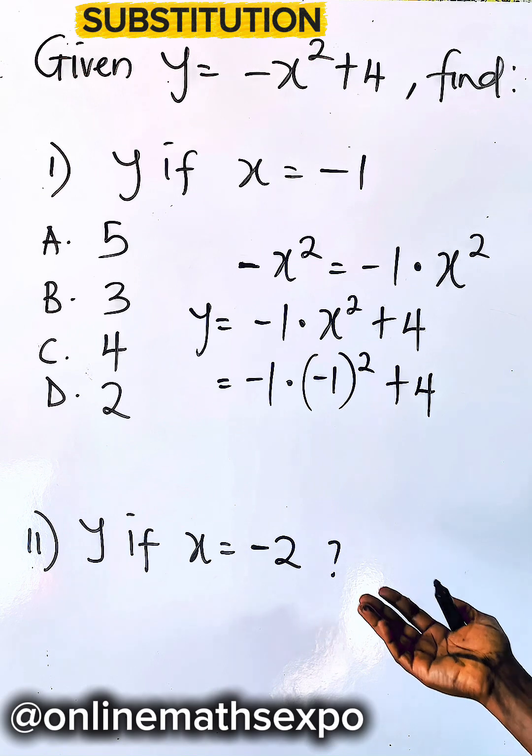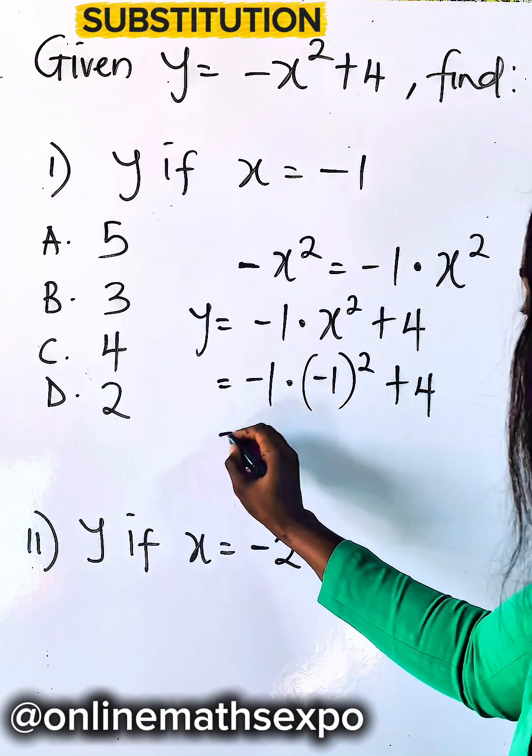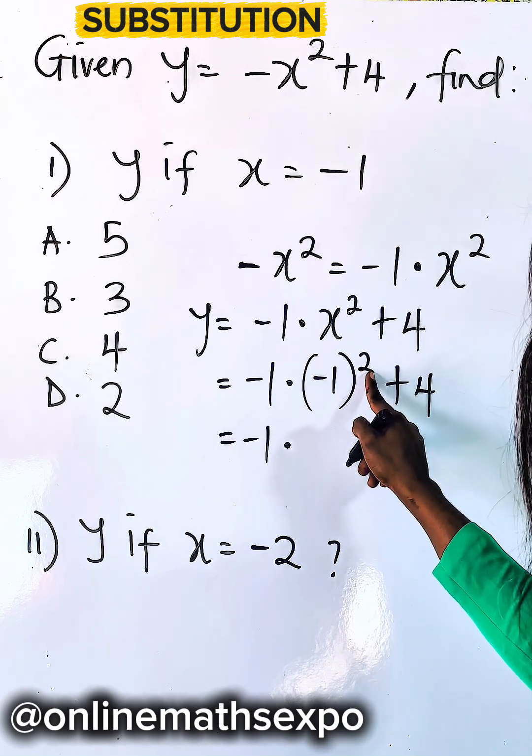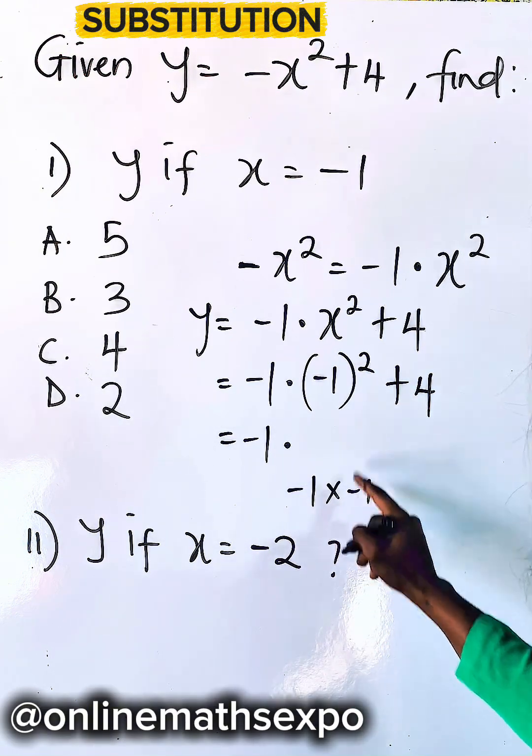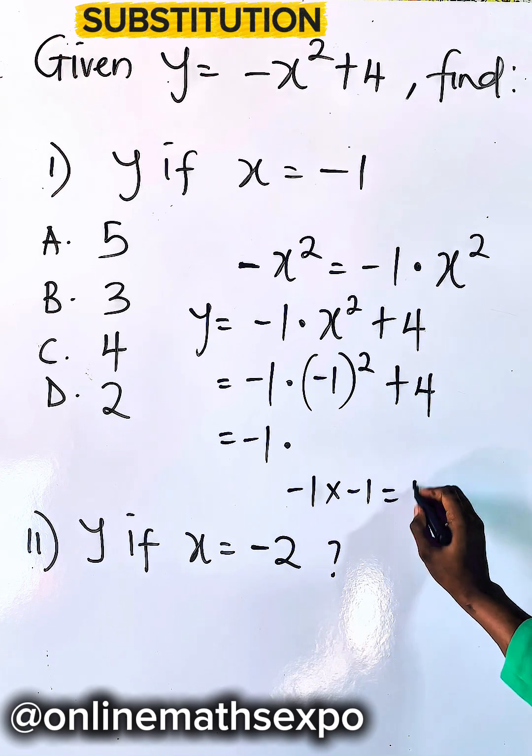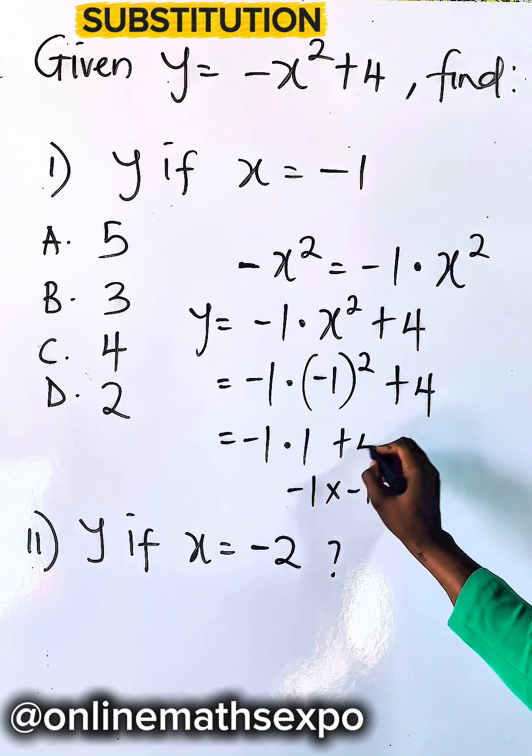Use your BODMAS. You deal with the power first. So you have -1. When you square -1, it gives you positive 1. So -1 times -1, that's what this means, and it gives you positive 1. Then add 4.